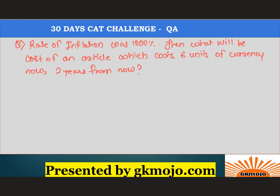Let's have a look at the second question. The rate of inflation was 1000 percent. What will be the cost of an article that costs 6 units of currency now, two years from now? Many students find this language difficult. You have to find the cost of the article after two years; the present cost is 6 units.